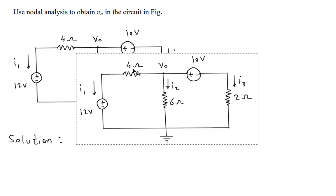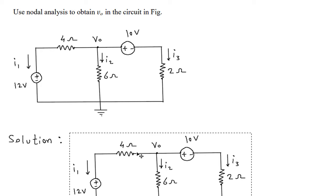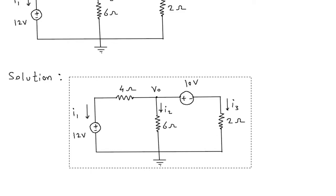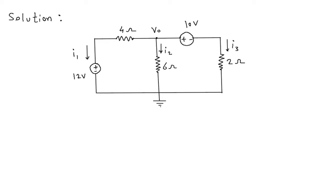Solution. First we will redraw the circuit. Then let's assume this is 0V because this is the reference node.